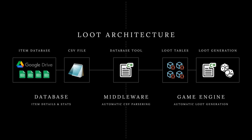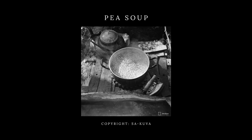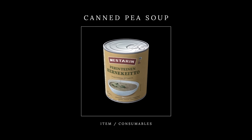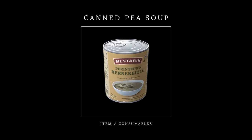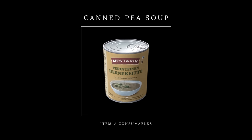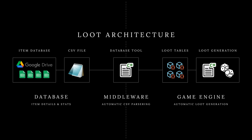To make things easier to understand, we need a target item that we can track all the way through this process from databases to the player's inventory. For this purpose, I chose a Finnish national delicacy, pea soup, as our target item. In the game, this item is called canned pea soup and it belongs to the category consumables. Now let's start tracking how this item ends up in the game and what processes there are along the way.